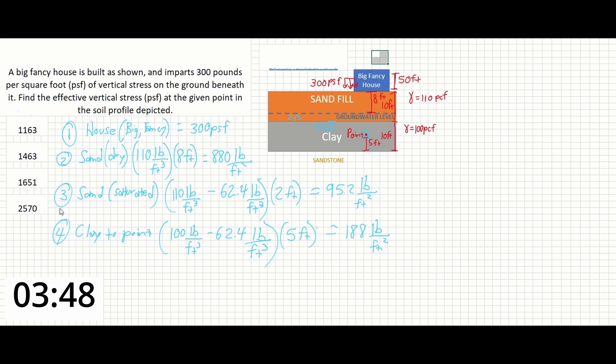If we sum up each of the vertical stresses that we calculated from 1 to 4, we're going to see that our total effective vertical stress is about 1463 pounds per square foot, which we can see is our second answer.